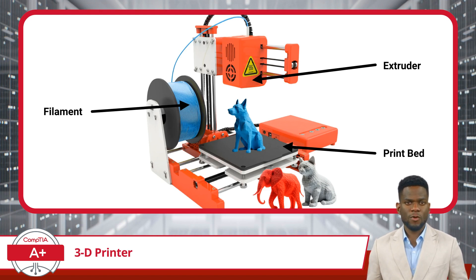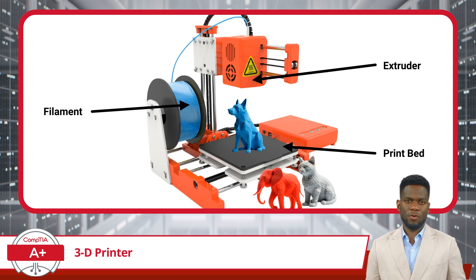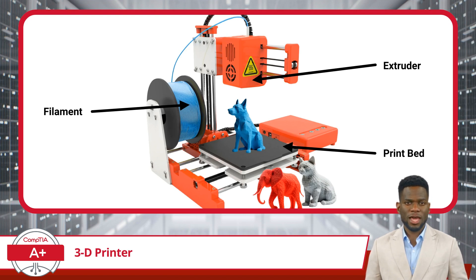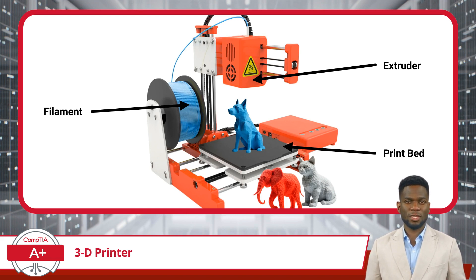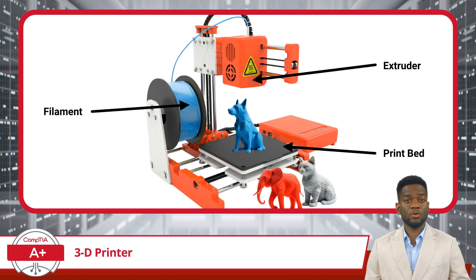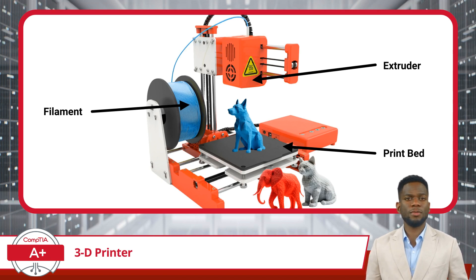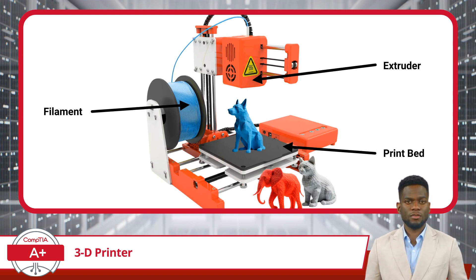Alternatively, resin can serve as another material used in 3D printing. Resin printing involves using liquid resin that is cured layer-by-layer using UV light, producing high-resolution prints with smooth surface finishes. Acting as the foundation, the print bed provides a stable surface upon which the object is constructed. Its primary function is to ensure the initial layer of material adheres securely during printing, preventing warping or detachment. Together, these components work harmoniously to transform digital designs into physical objects.